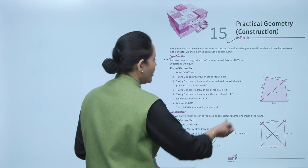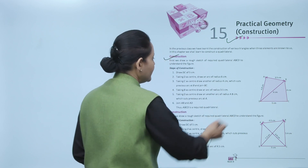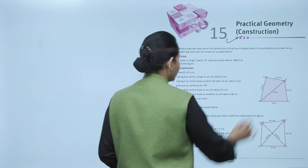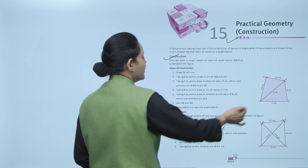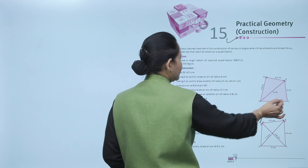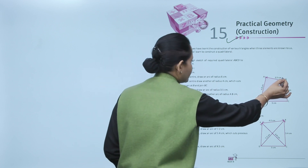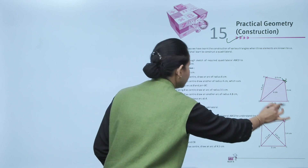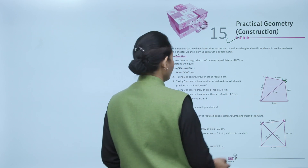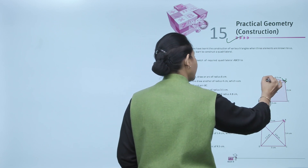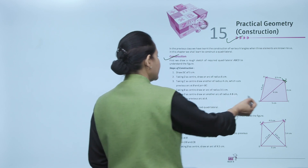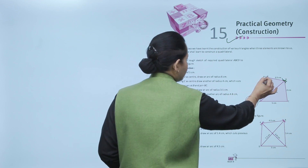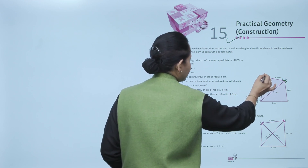First, we will draw DC = 5 cm, then with D as a center we will draw an arc of 6 cm. Next, we will take C as a center and make another arc of 4 cm — that intersection point is B. Now, we will take B as a center with 3.5 cm, and D as a center with 4.8 cm. Where both arcs intersect each other, that is point A.